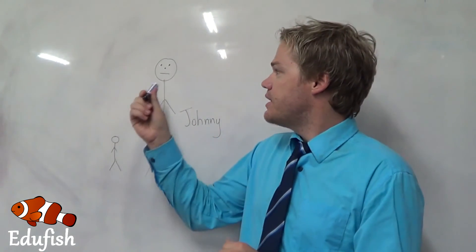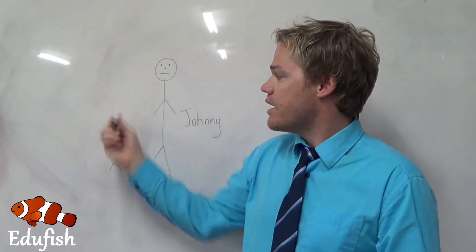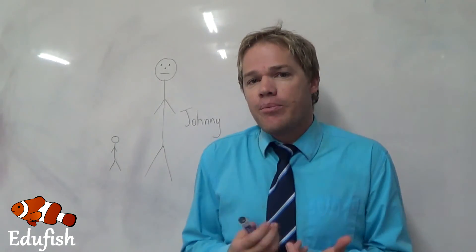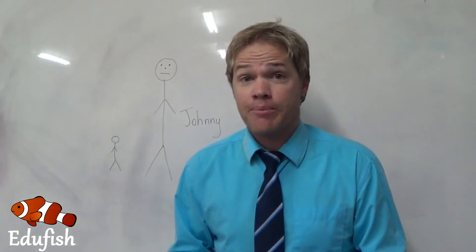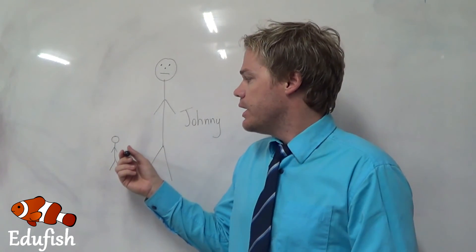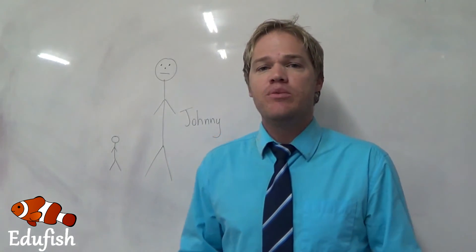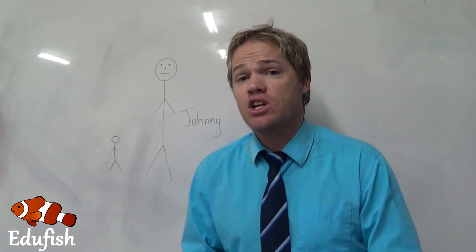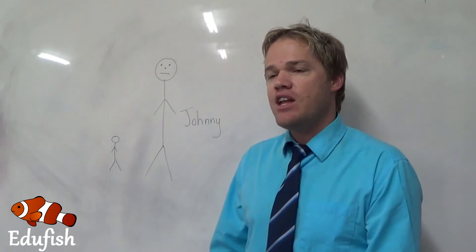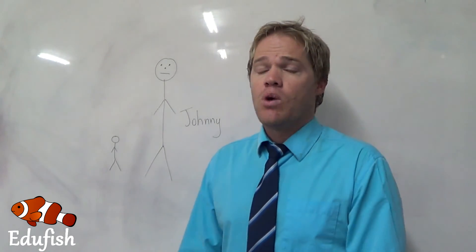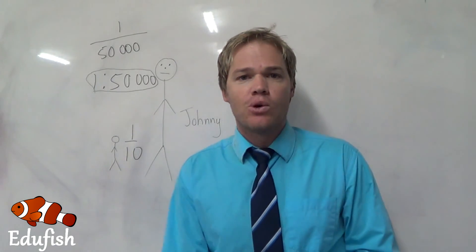So let's wrap it up. A statue is a representation of Johnny. The best representation would be to make it exactly the same size, but it's not practical because he wants to carry it around. So in order to make the statue more practical, we had to make it smaller — in the same way, a certain area or a representation of a certain area had to be made a lot smaller to make it more practical, so you can fit it onto a piece of paper and use it in a classroom or wherever you are traveling. Thanks for tuning in. In the next lesson, I'll explain how to use this ratio scale to calculate distance.